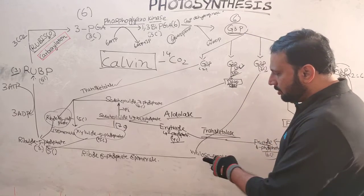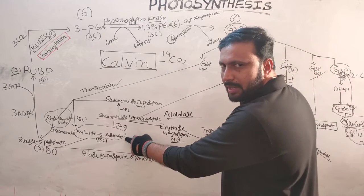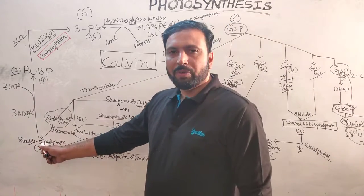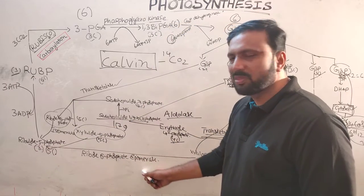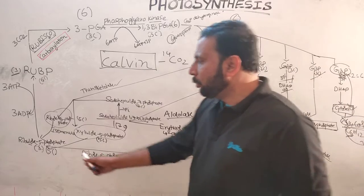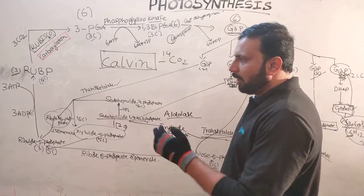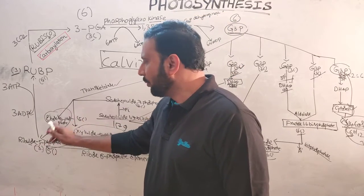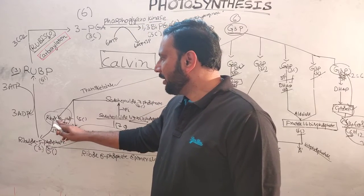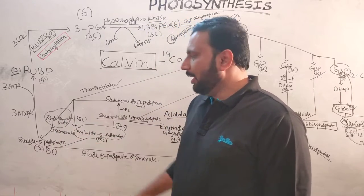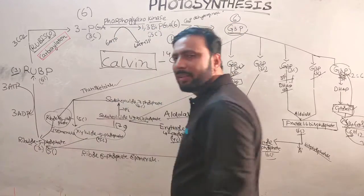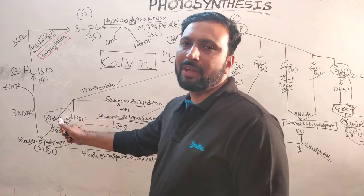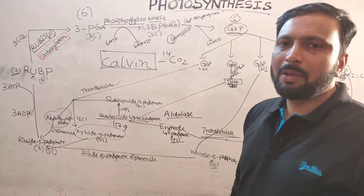The two xylulose-5-phosphate molecules are each converted into ribulose-5-phosphate in the presence of ribose-5-phosphate epimerase. The ribose-5-phosphate is also isomerized to ribulose-5-phosphate in the presence of ribose-5-phosphate isomerase. Finally, three ribulose-5-phosphates are formed: two from xylulose-5-phosphate and one from ribose-5-phosphate.